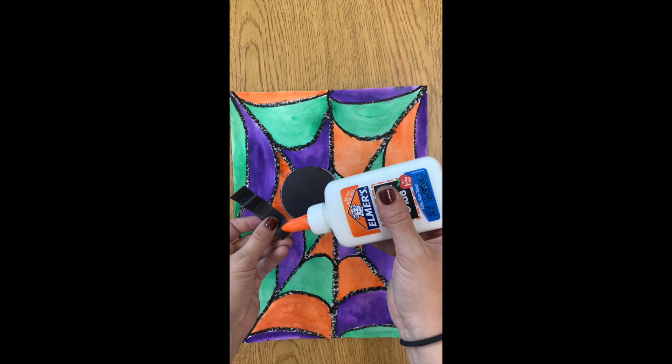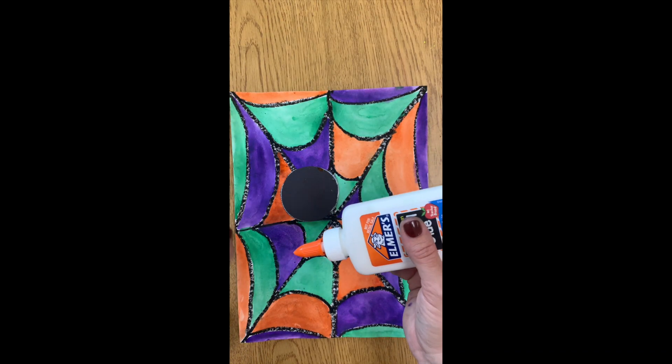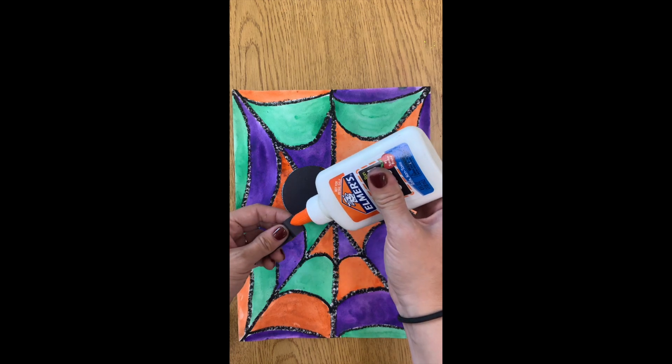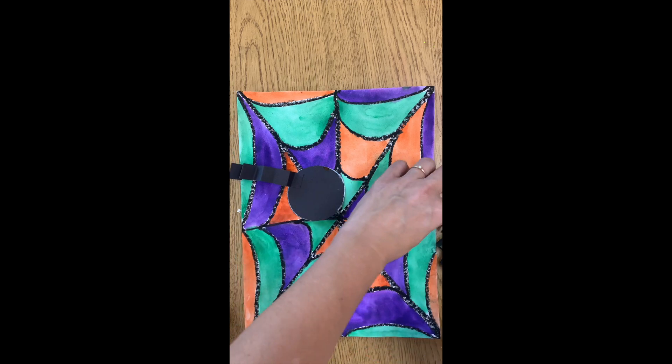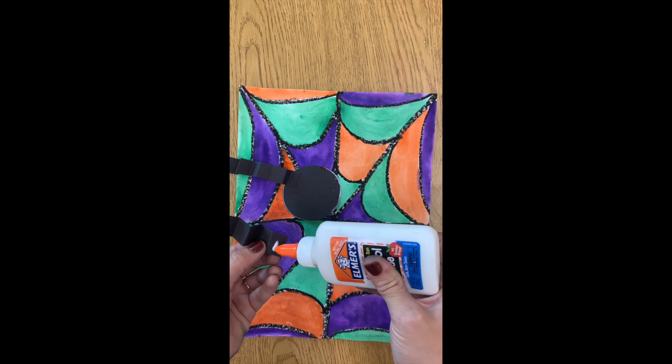Now it is time to glue. I am using a glue bottle to make sure that these stick really well, but I am only using a little bit of glue. I am putting a dot of glue on the back of each of my legs, and I am putting 4 legs on each side.